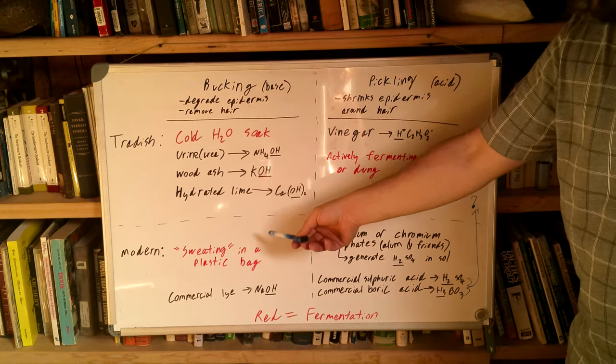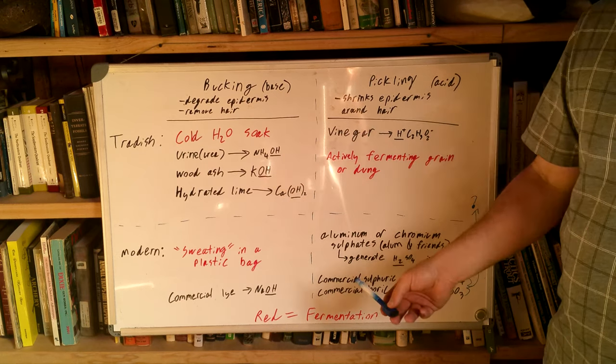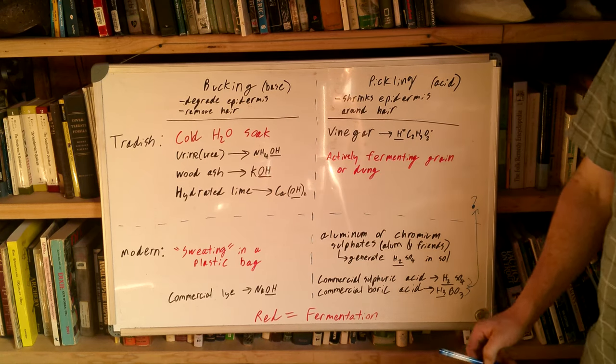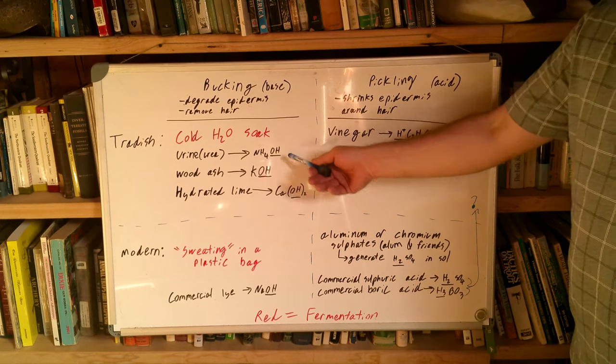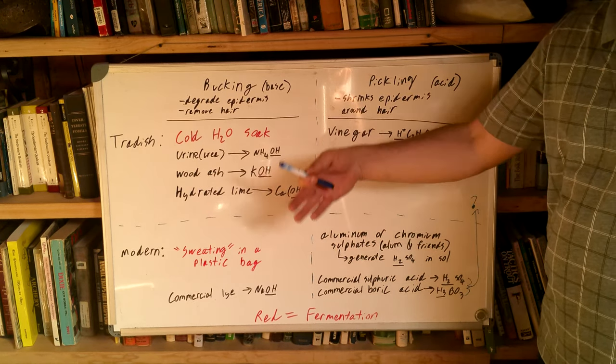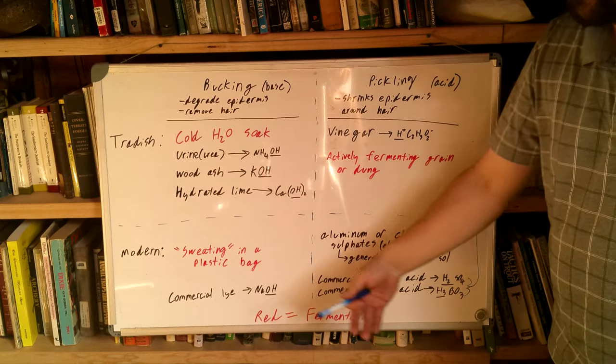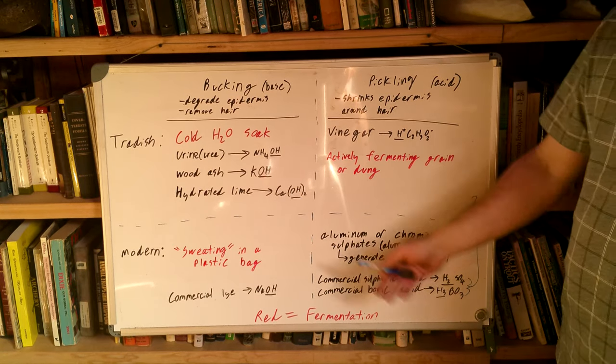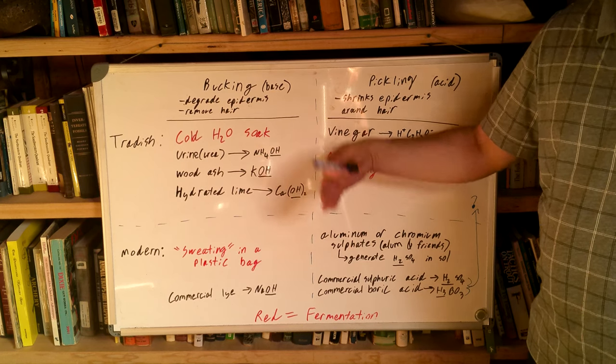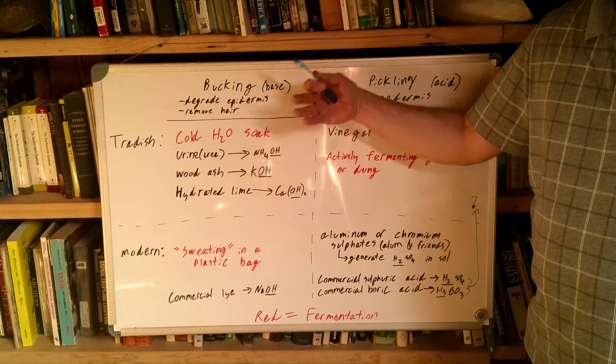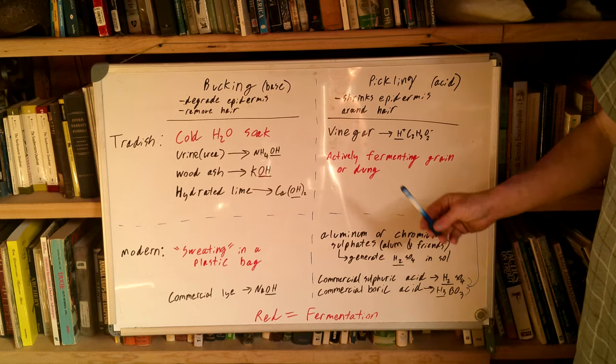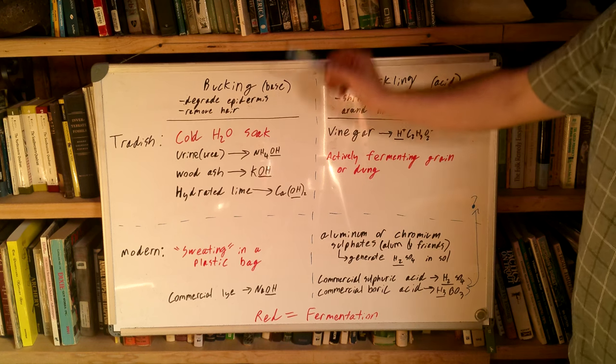Also, when you're done with bucking, you have to get all of the base out of the solution. OH- is the ion which makes things basic. You can do that by soaking it in water and just remove all of those OHs by diffusion. Or, you can add a little bit of a pickle to rapidly neutralize them. And it shortens the time length that you need to neutralize your hide.